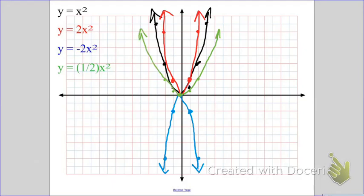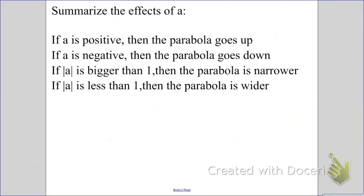So let's summarize. If the a, that means the number in front of x squared, if that number is positive, it's going to make the parabola go up. If the a is negative, then it's going to make the parabola go down.